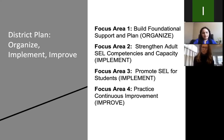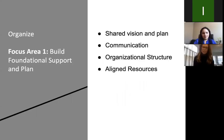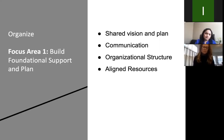Focus area one is around building foundational support and planning — the organizing phase. The four components of building foundational support are: having a shared vision and plan, effective communication around messaging, the organizational structure you need in place, and aligned resources. It's really part of your broader SEL strategic plan. It's important not to see this trauma-informed work as separate — it really falls under the SEL umbrella. Issues like trauma, anxiety, and depression are tier two and three concerns but are part of social-emotional learning.